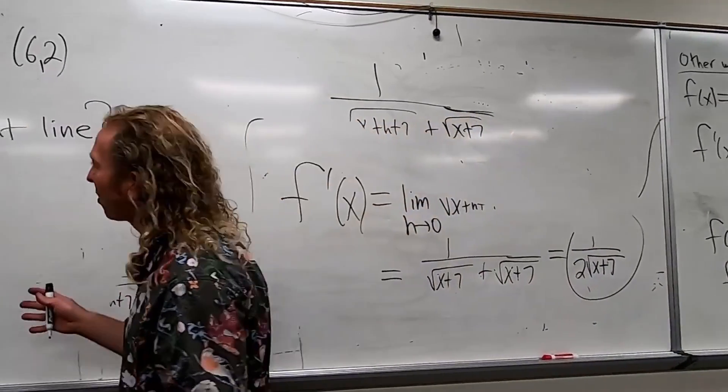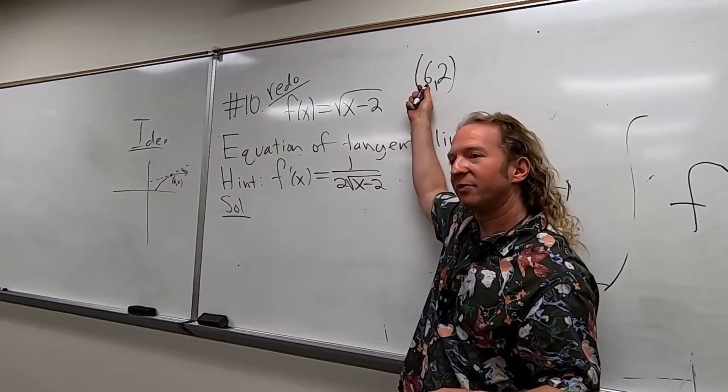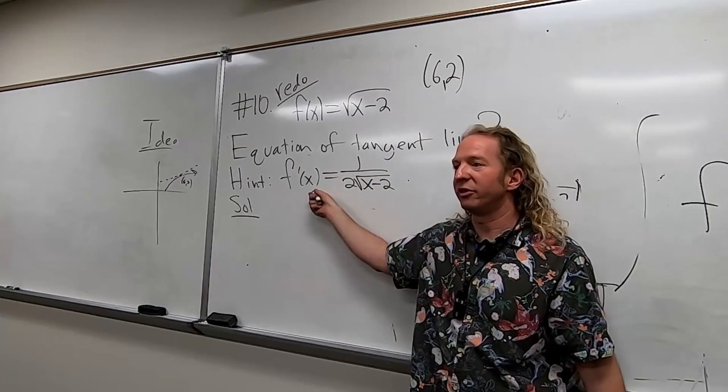So all we have to do in this problem is find the derivative and plug in the number six to find the slope. But they give us the derivative.